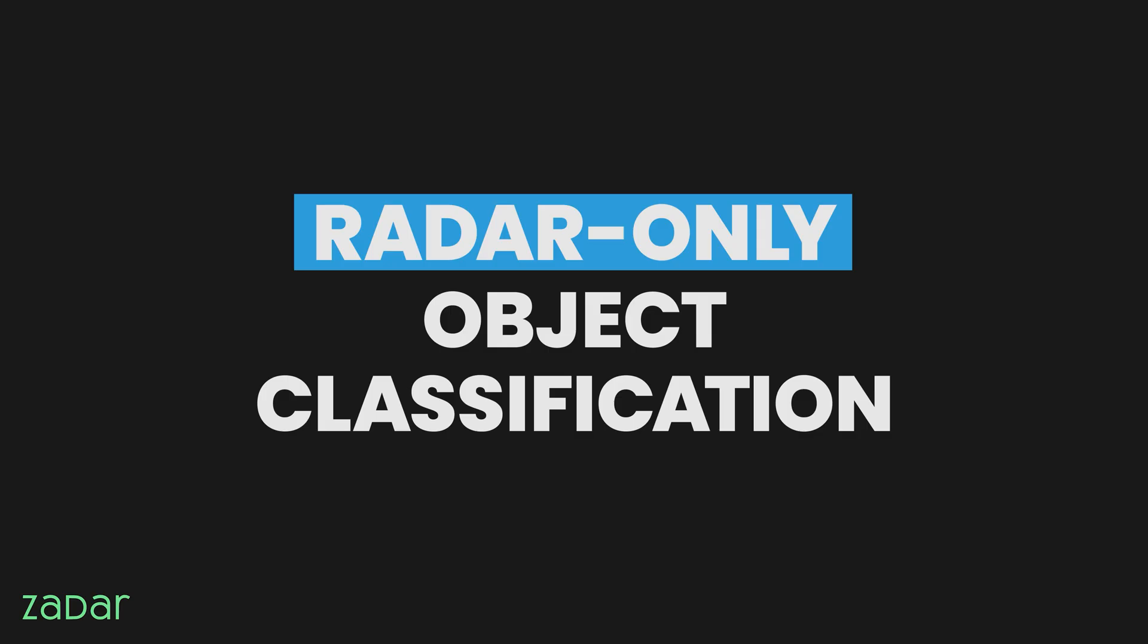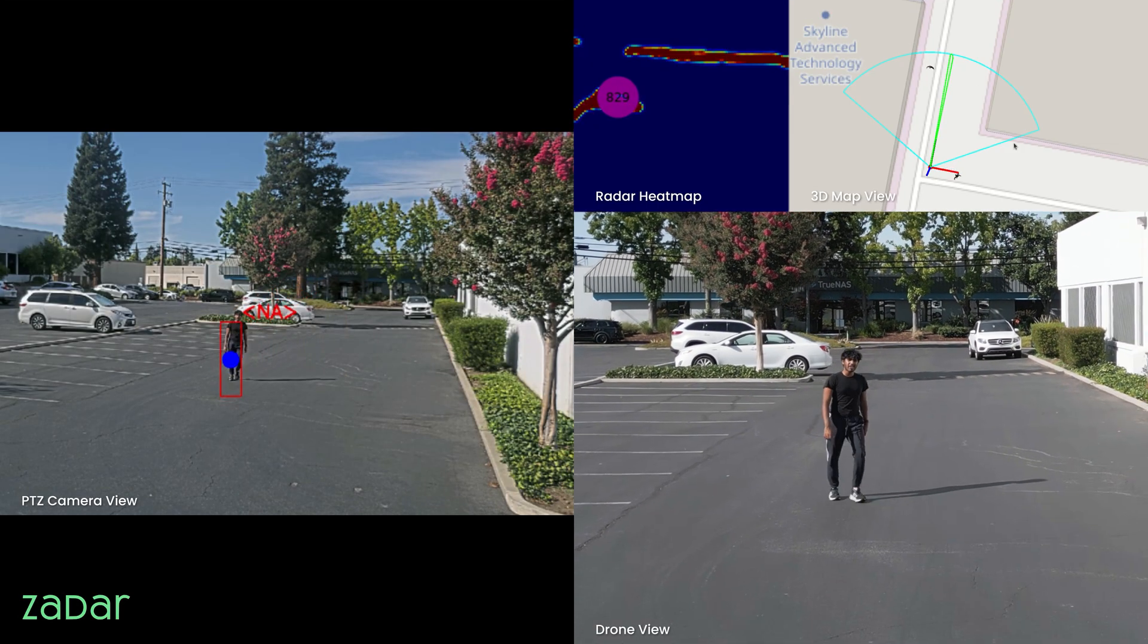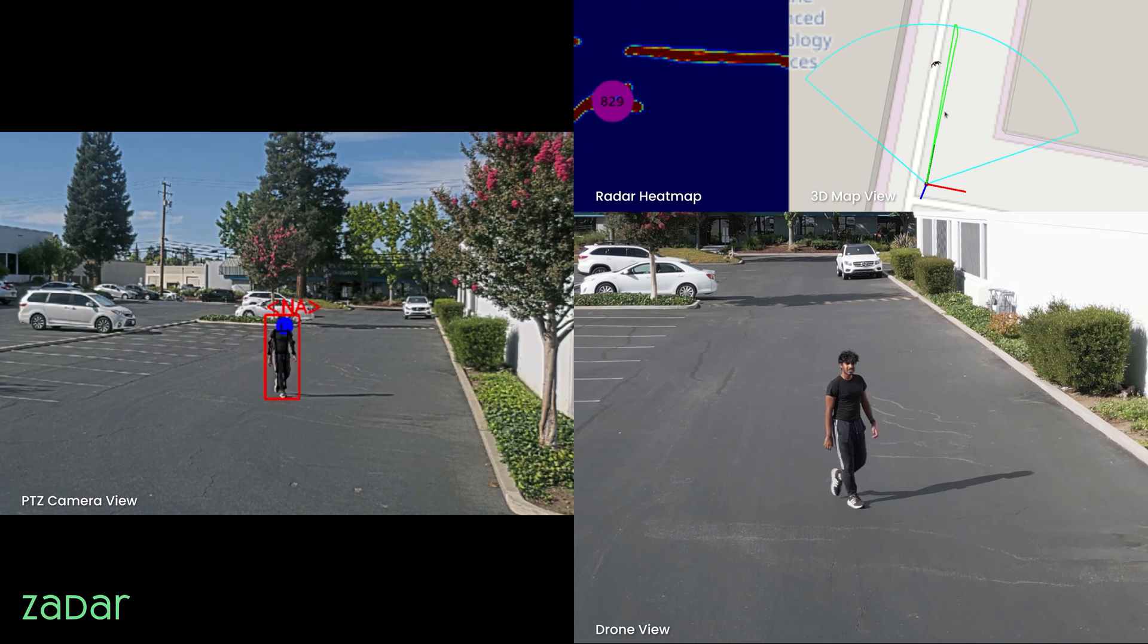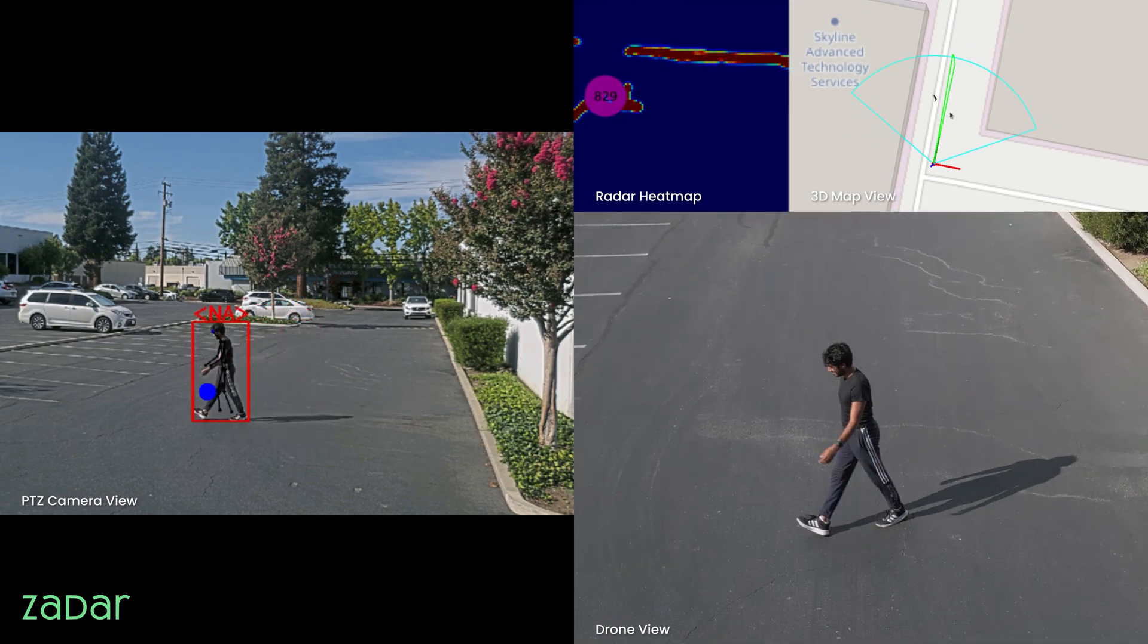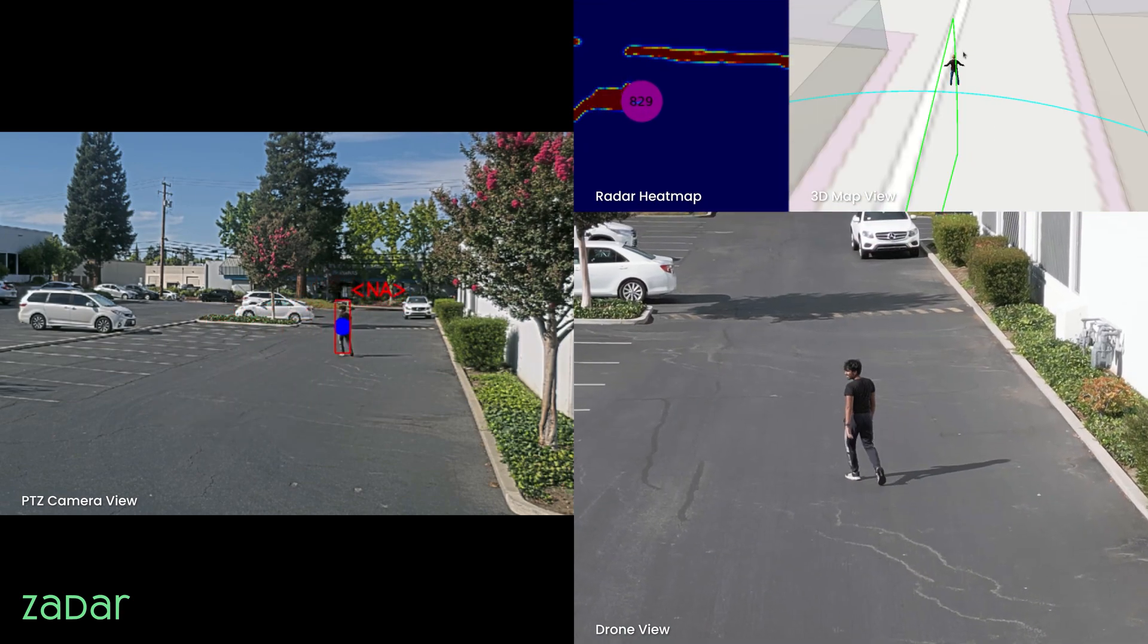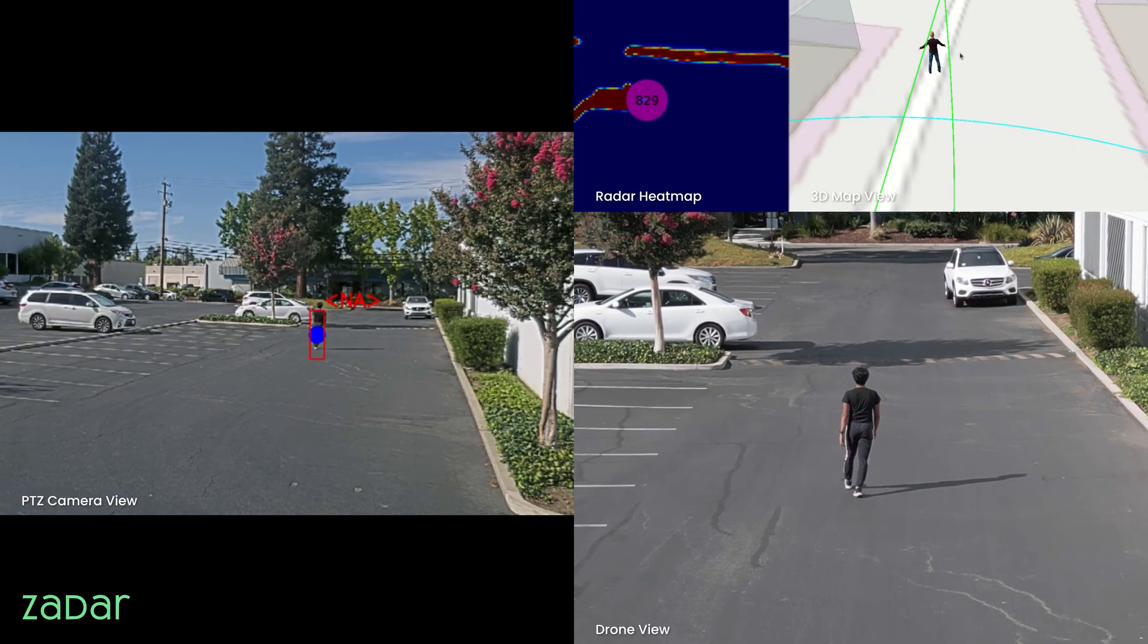Radar-only object classification. Z-Prime's high-resolution point cloud makes sense of chaos. Person, vehicle, or object, radar classification delivers unmatched accuracy, even in the harshest conditions.